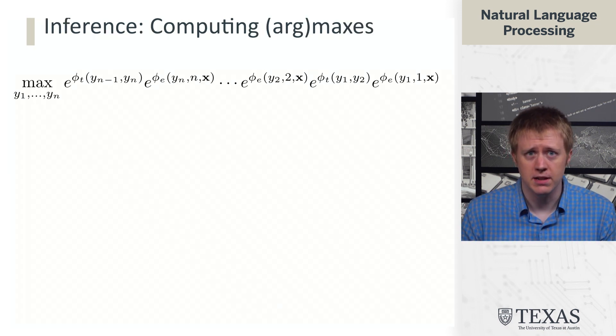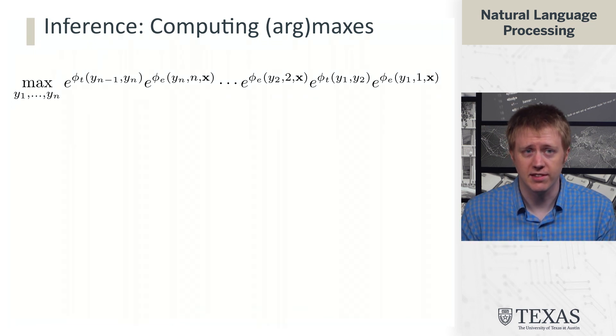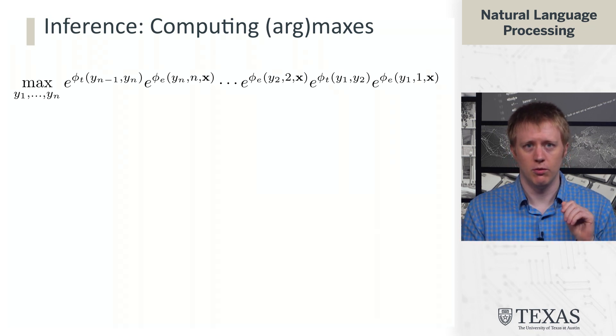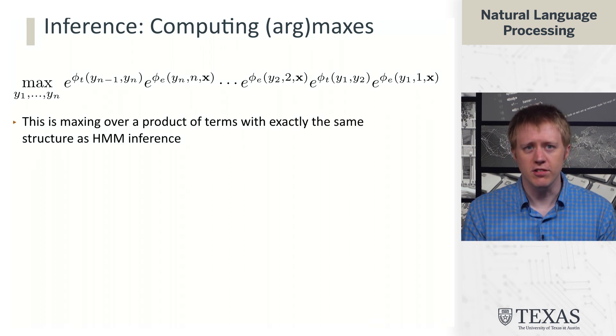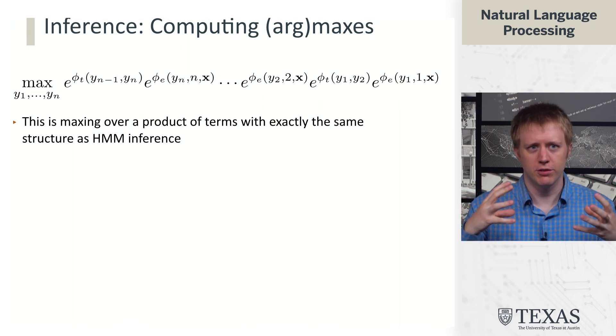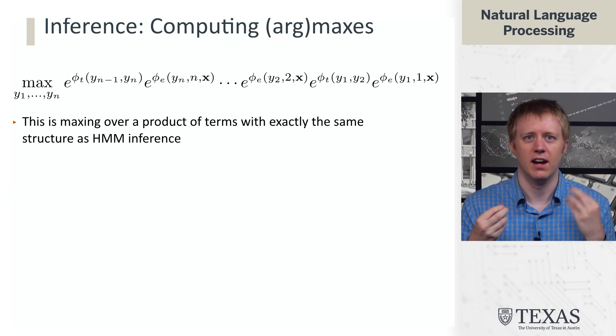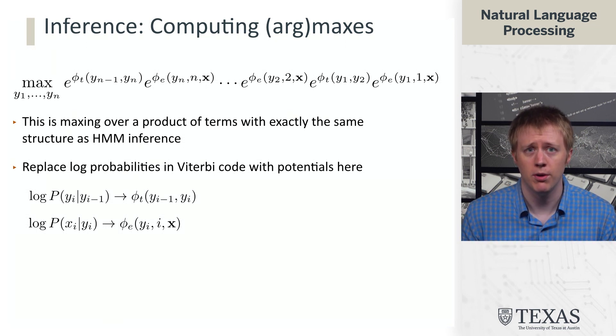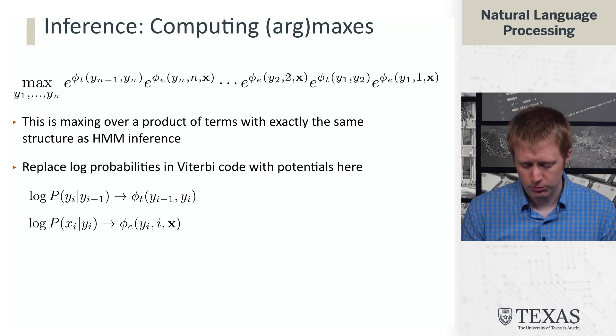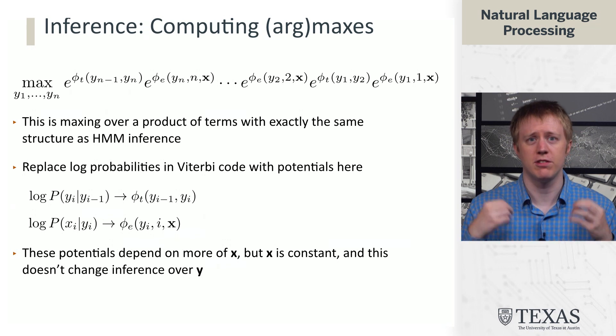This is actually going to be fairly painless in the sense that we can rely on what we already know. So what we're trying to do is max over this collection of variables y of this sort of complicated term here involving all these exponentiated potential functions. But it turns out that the maxing over this product of terms exactly looks like what we were doing in an HMM to do inference there. We can take the Viterbi algorithm implementation we had with HMMs and just straight up replace the log probabilities that we were using before with these potentials phi. And we're done.